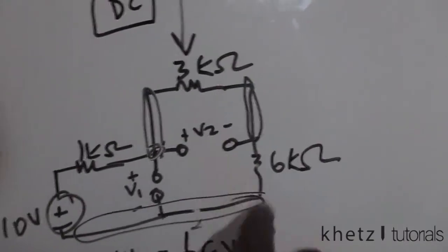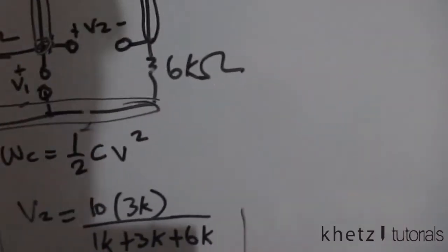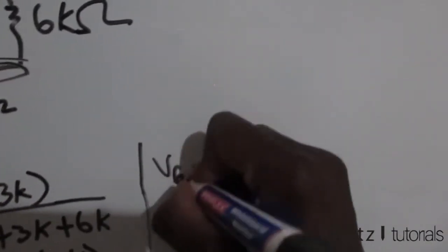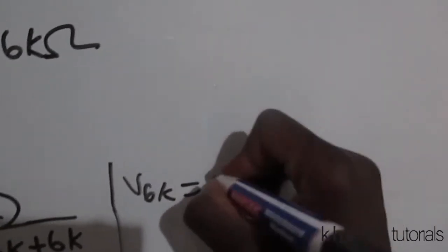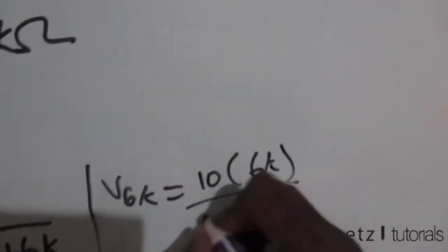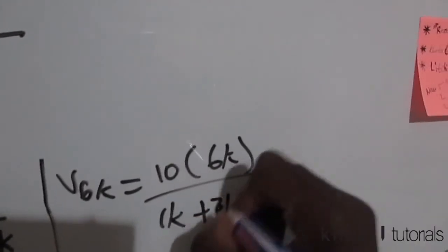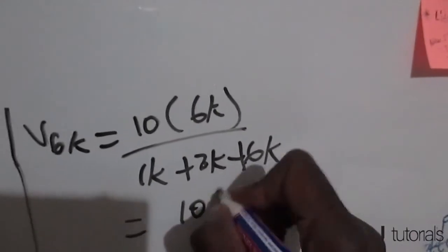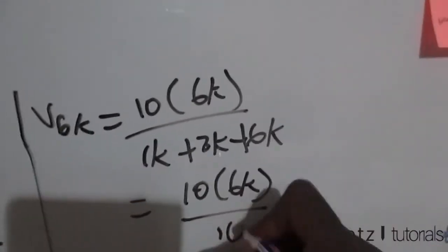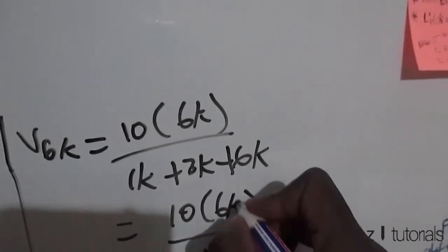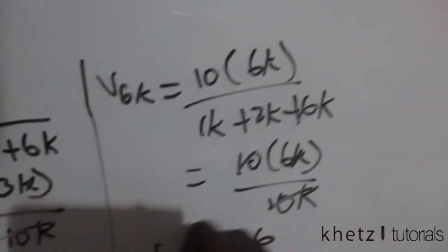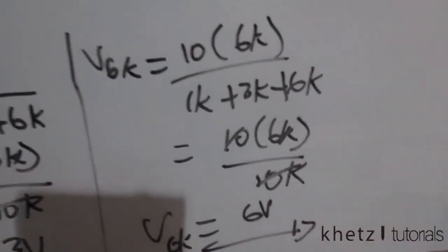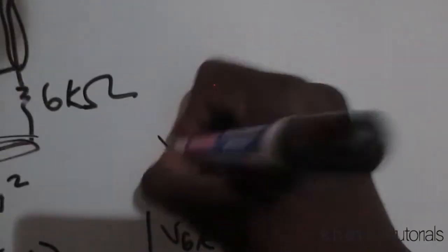Let's find the voltage across the 6k. Voltage across the 6k equals 10 multiplied by 6k divided by 1k plus 3k plus 6k. Simplifying: 10 multiplied by 6k divided by 10k, and the 10k cancels out, giving us 6 volts across the 6k ohm resistor. Which means v1 equals 3 plus 6.